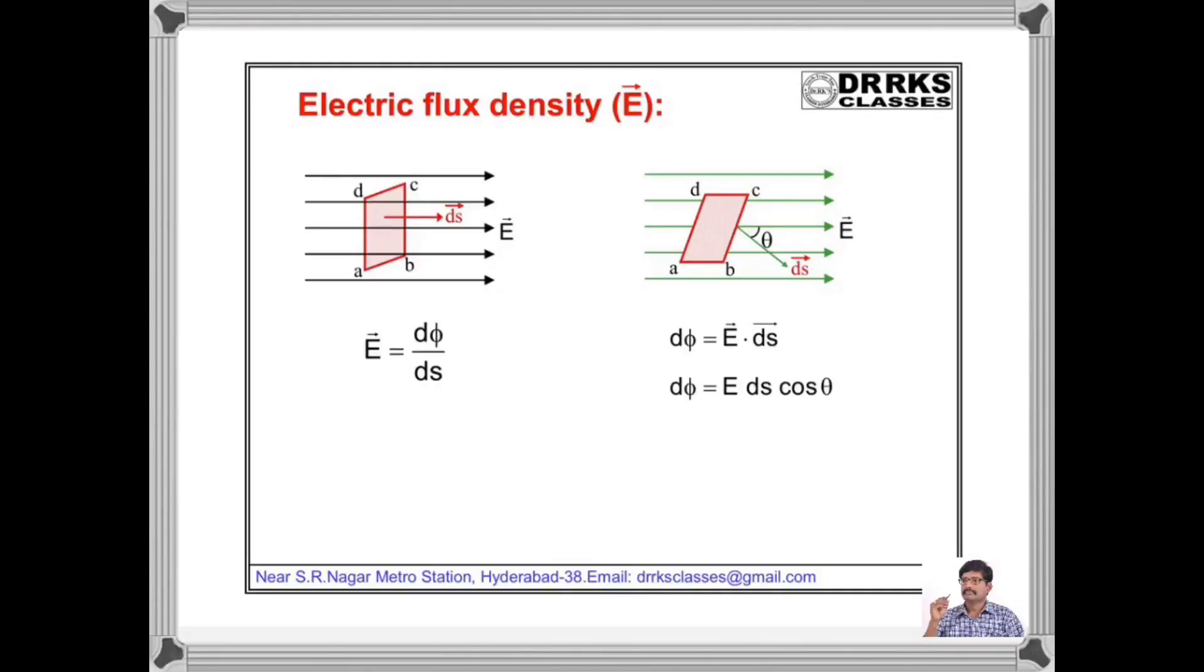The density of lines of force or flux represents the strength of the electric field. The electric flux dφ passing through unit normal area ds is equal to the strength of the electric field, where E = dφ/ds. The area vector is always perpendicular to the area. If the area vector makes an angle theta with electric field, then dφ = E·ds·cos(theta).